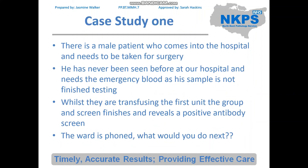Let's get into some case studies. The first case study is about a male patient who has come into hospital and needs to be taken for surgery. He's never been seen before and needs emergency blood as his sample is not finished testing. Whilst they are transfusing the first unit, the group and screen finishes and reveals a positive antibody screen. The ward is phoned — but what would you do next? Obviously we want to prioritise testing the patient's antibodies with a panel. But if we have the phenotype, then at the very least any further blood can be RH matched, which would negate the possibility of it being an RH antibody affecting the patient — though this isn't always going to work depending on what the antibody actually is.